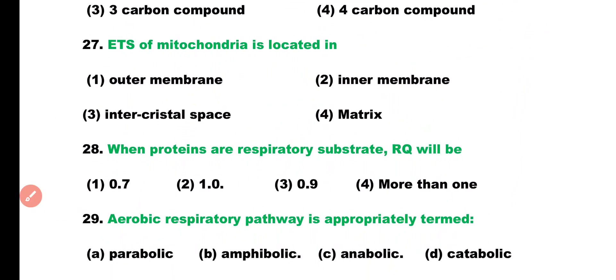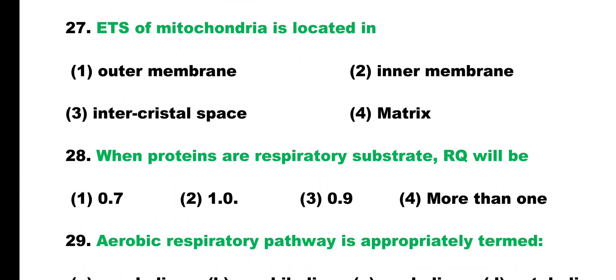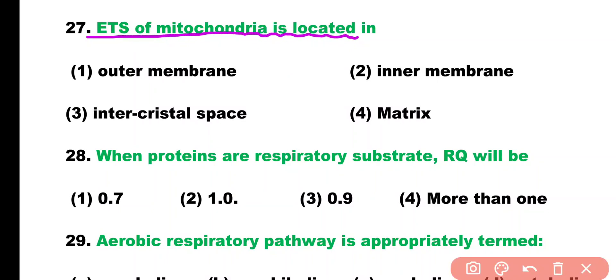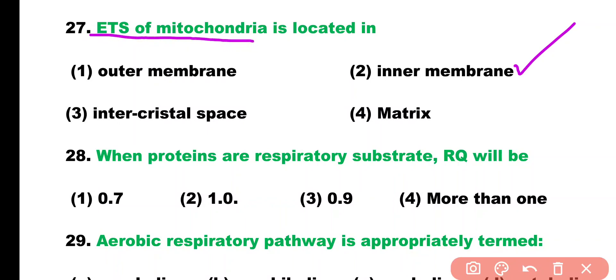Question number 27. The electron transport system of mitochondria is located in: outer membrane, inner membrane, intercristal space, or mitochondrial matrix. Correct answer is option 2. The electron transport system of mitochondria is located in the inner mitochondrial membrane.